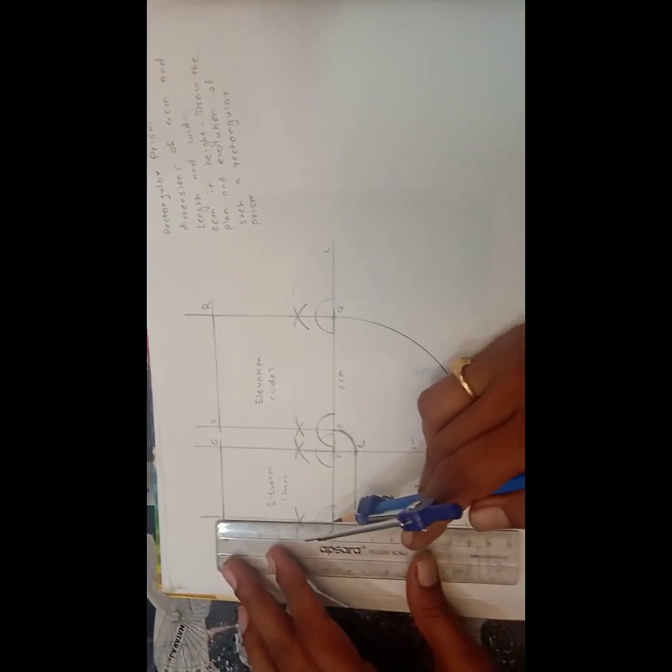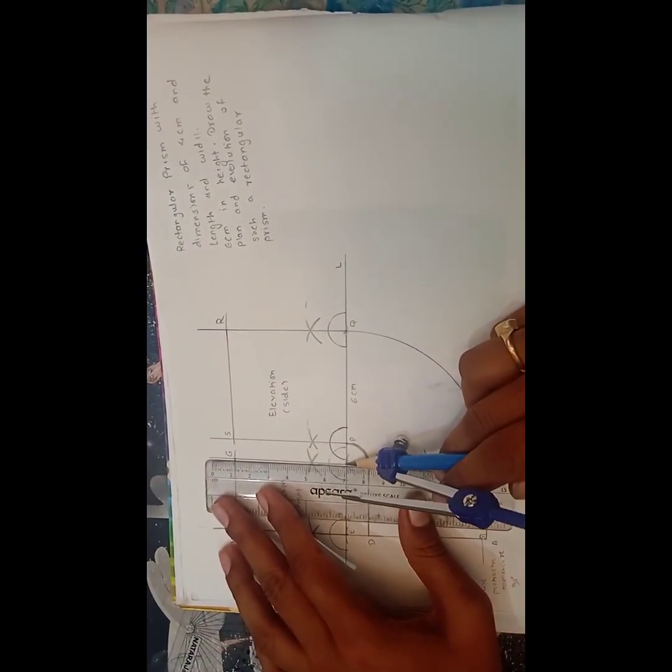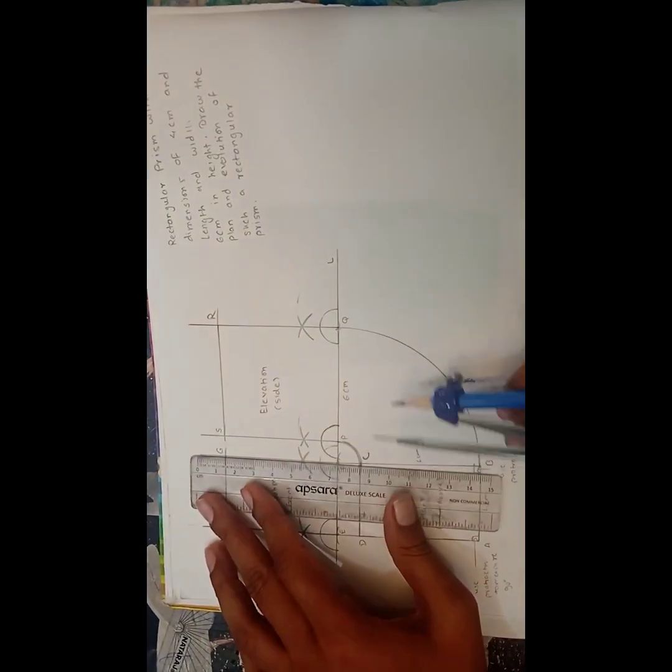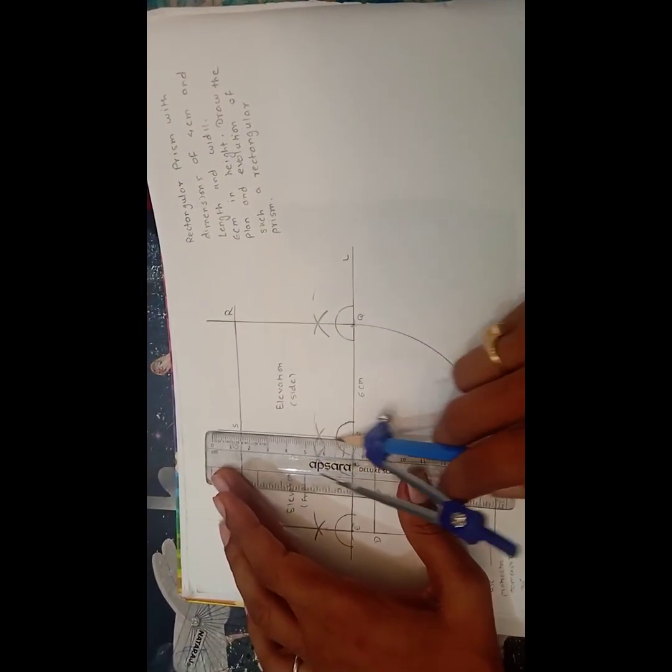Now from this point just join. Here E is the point. Just draw the line which is passing through it. Similarly from the F point draw another line which is passing through it. Then from point P draw another line which is passing through it to the S.